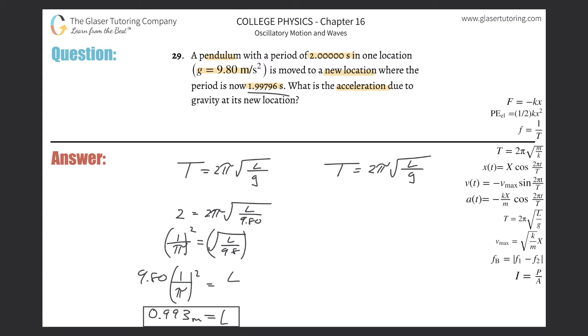So basically that tells the new period is going to be 1.99796. That's equal to 2π, then multiplied by the length, which is 0.993. I'm going to take the exact value that when I calculate and then divide that by g. I'm going to solve this for g.